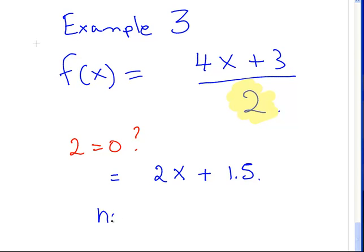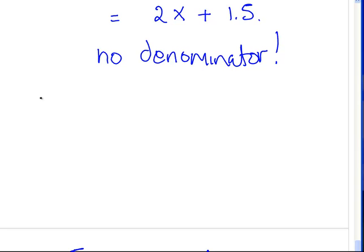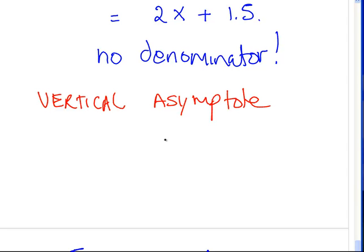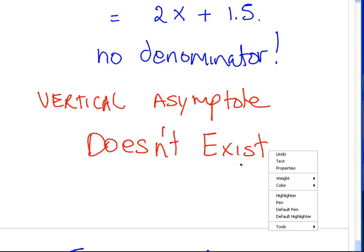What does that mean? The vertical asymptote doesn't exist. There does not necessarily have to be a vertical asymptote, or there does not necessarily have to be a horizontal asymptote. In fact, you might have one but not the other; you might have neither; you might have both. So in this case, the vertical asymptote doesn't exist.